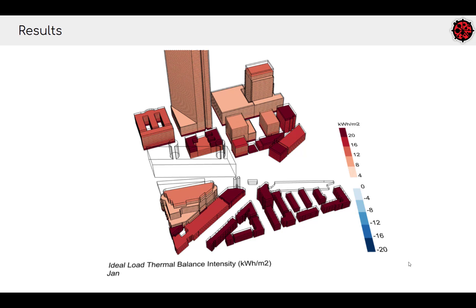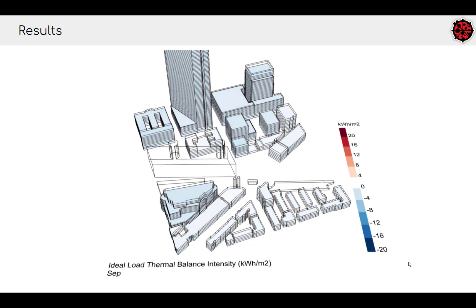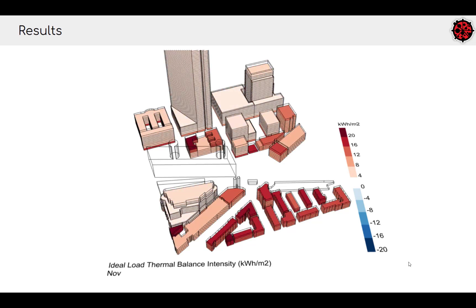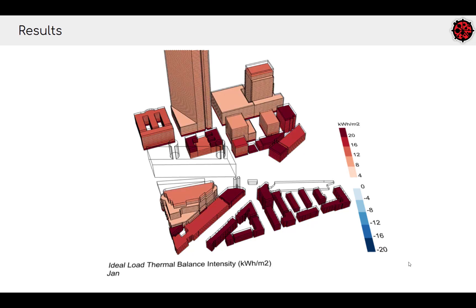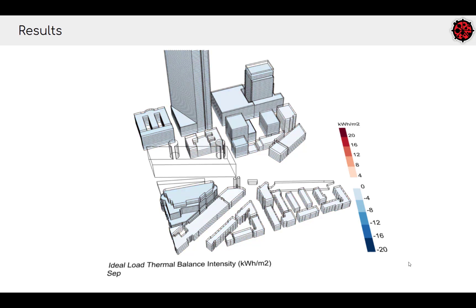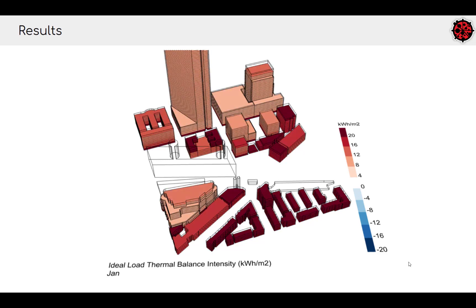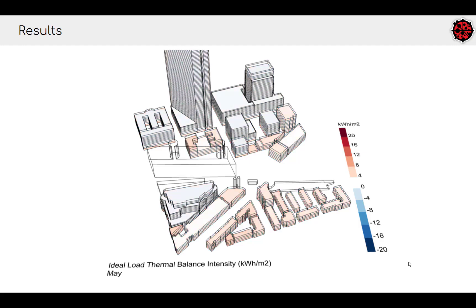Because we'll be working in Grasshopper, you can do things like scrolling through the results and slicing them — for example, scrolling through months of the year to see which buildings are in heating mode and which are in cooling, or if there's any simultaneous heating and cooling you can utilize. Hopefully this gets you excited and gives you a sense of what we're going to be covering in this workshop series. With that, I'll end this video and hopefully see you in the next one.